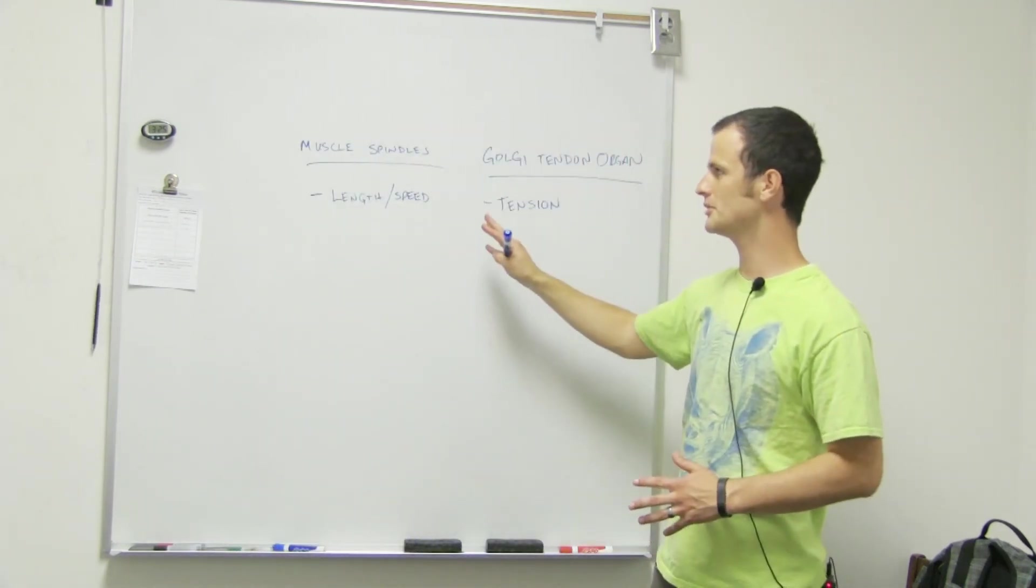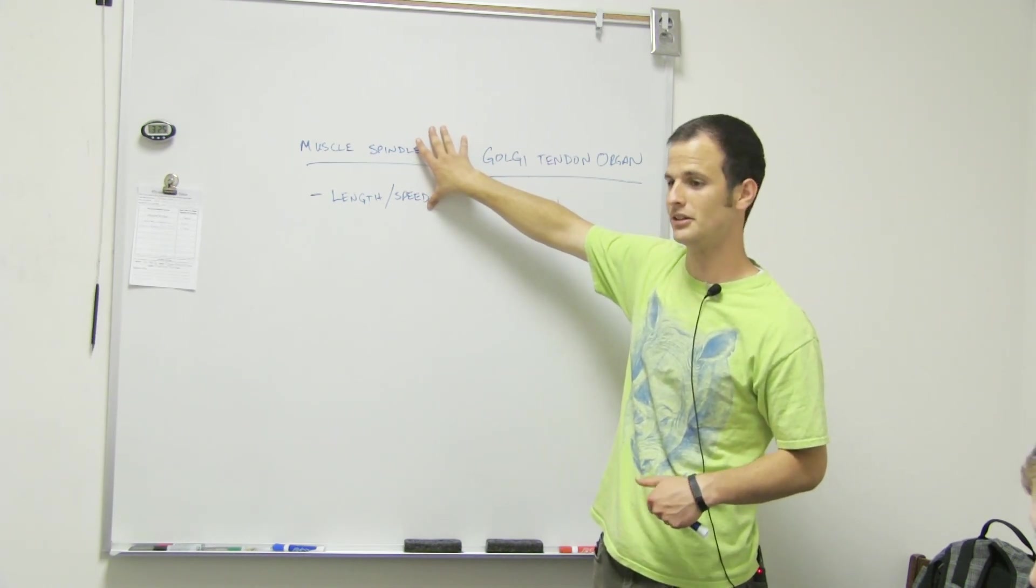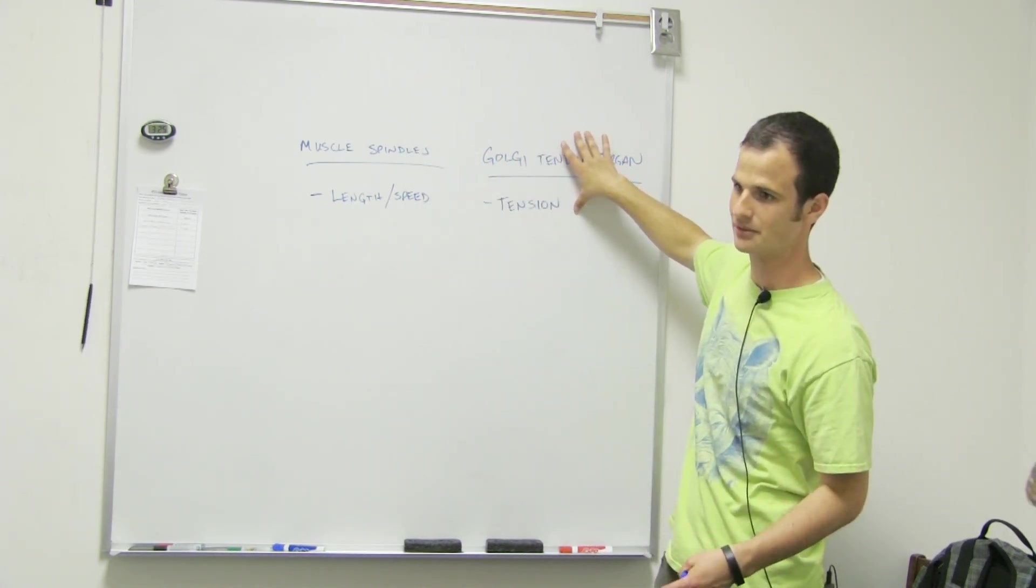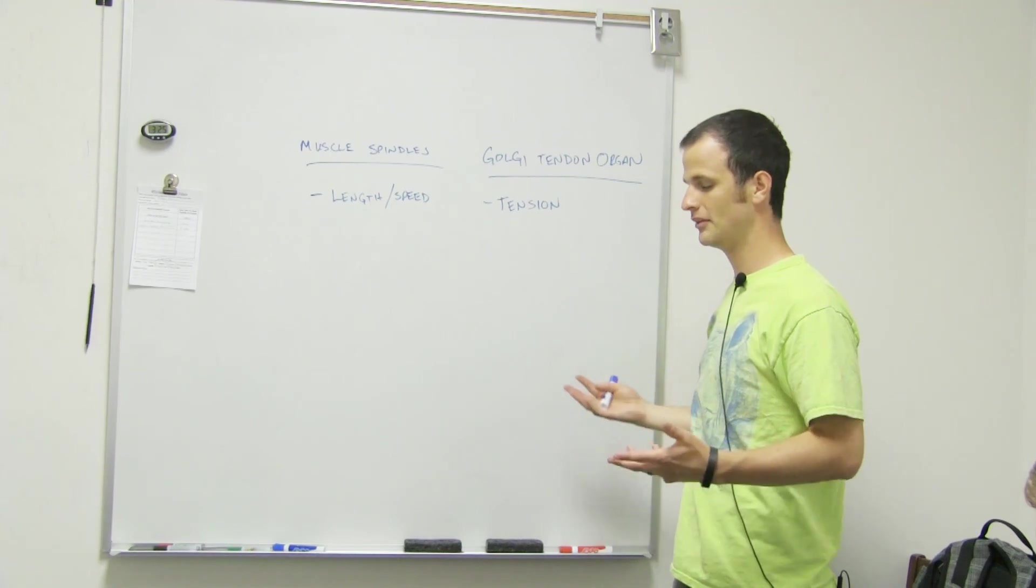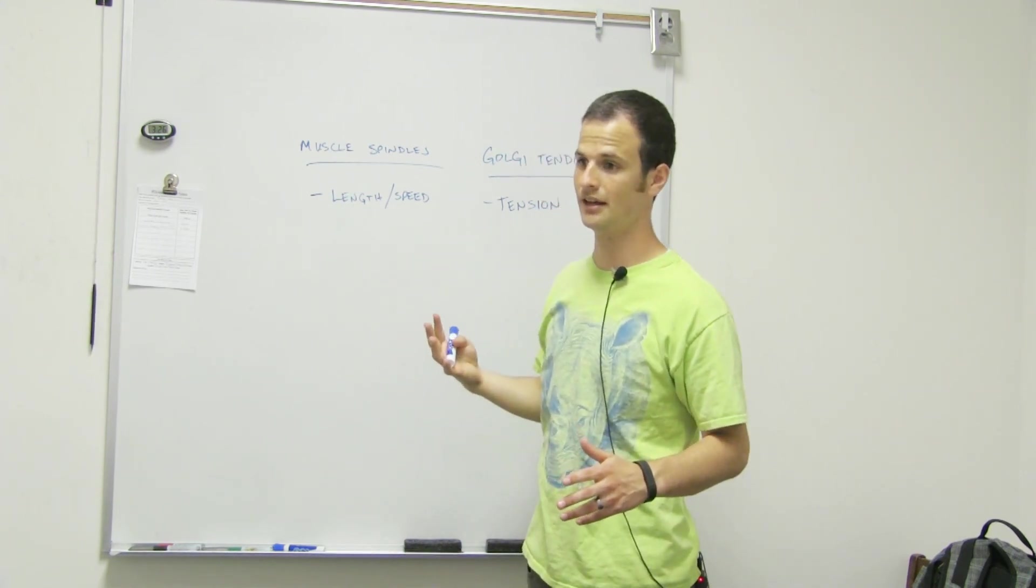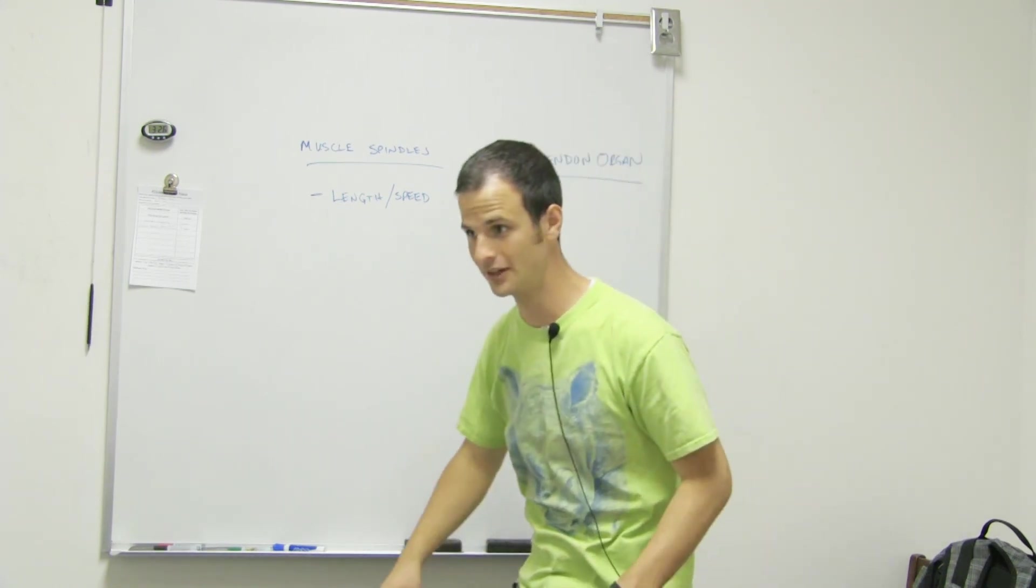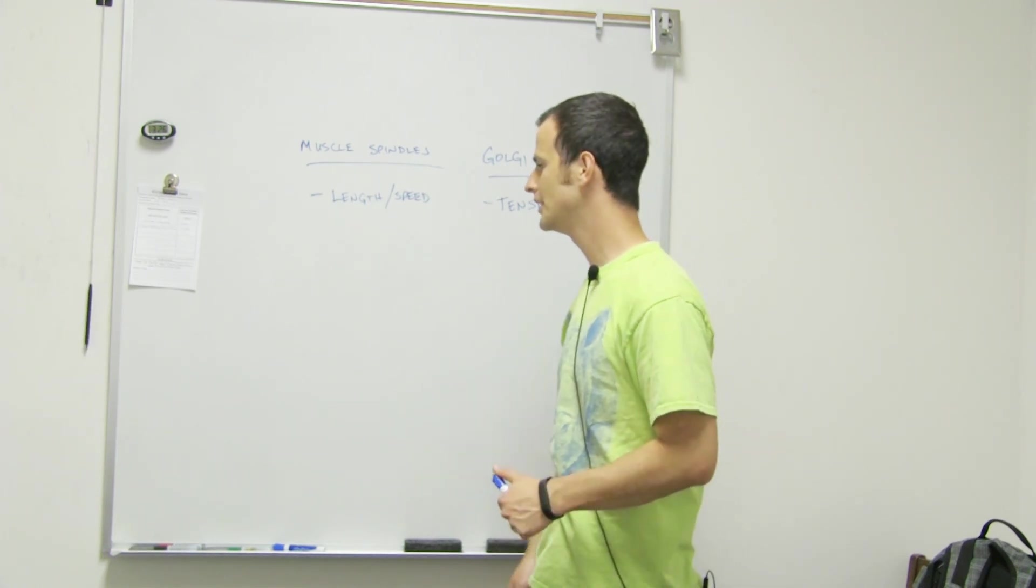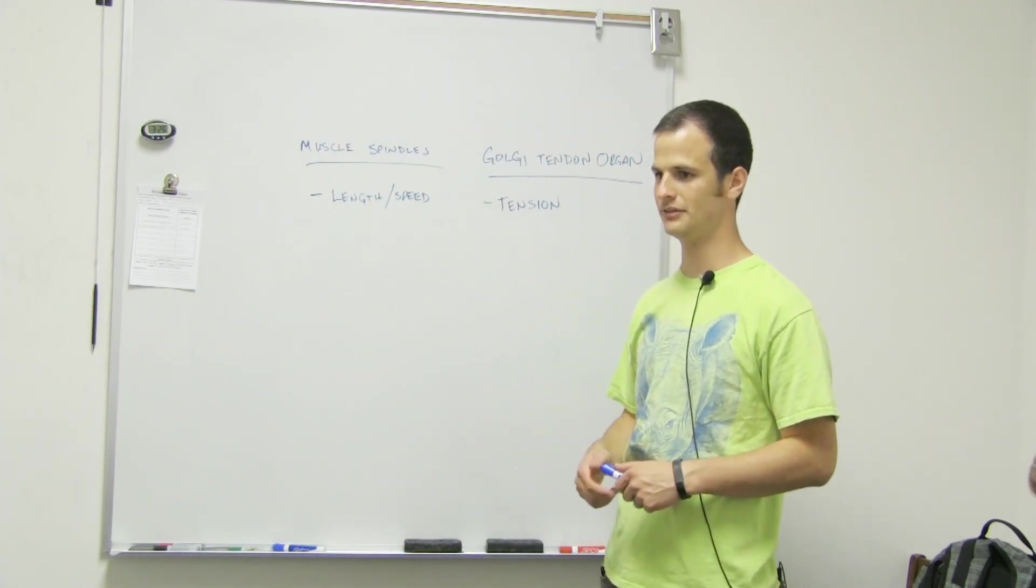So those are those reflexes. So muscle spindles react by contracting that agonist muscle, and then Golgi tendon organ relaxes it basically. But they're both involved in basically prevention of injury. That's more so Golgi tendon organ. Muscle spindles are kind of involved in a lot of different things like posture and stuff like that. Like if you slip back here, your abs will contract so that you can regain your balance and stuff like that. It's like proprioception and things like that, but also I guess injury prevention as well. So those are those ones. So now we also have like withdrawal reflexes.